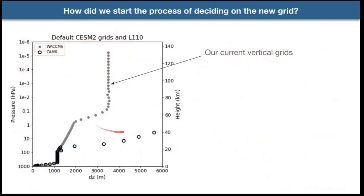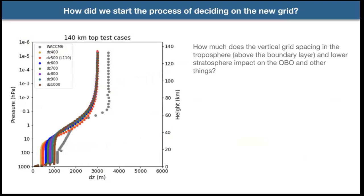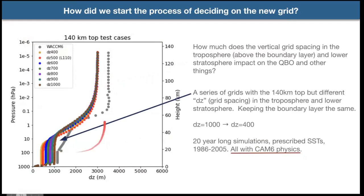Here are our current grids in CESM2. The approach we took to figure out what resolution we wanted was: keeping the 140 km top, we ran a bunch of simulations to look at how much grid spacing in the troposphere and lower stratosphere affects things like the QBO. We ran a series of grids all with 140 km top but different grid spacing ranging from 1,000 to 400 meters in 100-meter increments. We did not change the boundary layer resolution — if you change that, you have to retune all the physics — so we only modified the resolution above 850 hPa.